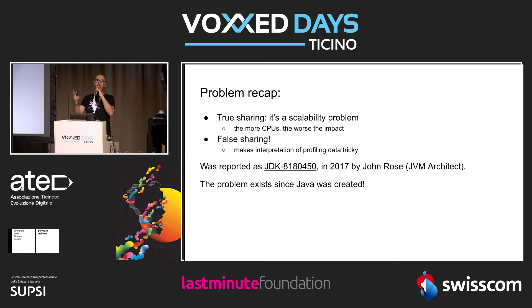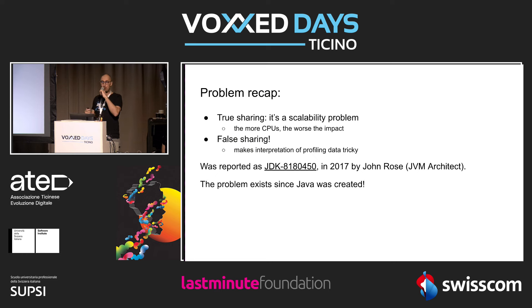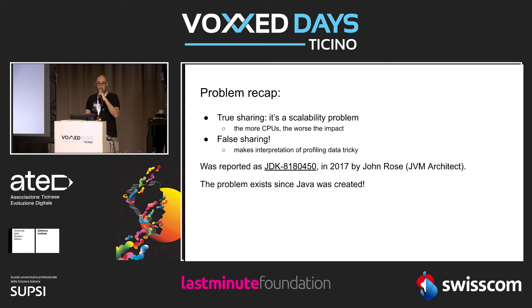To recap: we have a true sharing problem — that single shared field creates a scalability issue because the last-level cache must act as a message bus across CPUs, and each CPU fighting to modify it contends on the same cache line. We also have a false sharing problem that makes profiling data very noisy. The performance impact is severe. Even the person who wrote that original line of code filed a JDK issue two years later — thinking multi-core wasn't the future. It was.